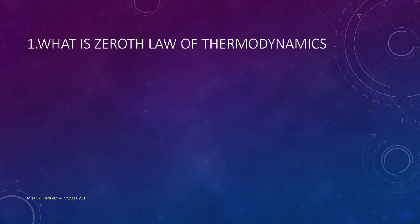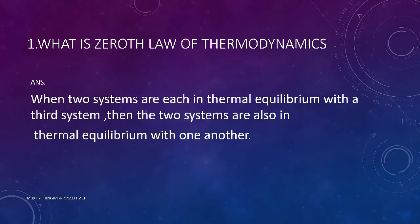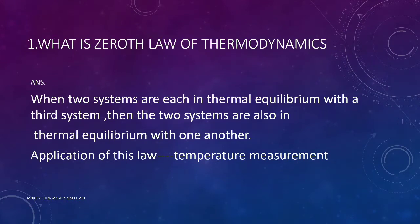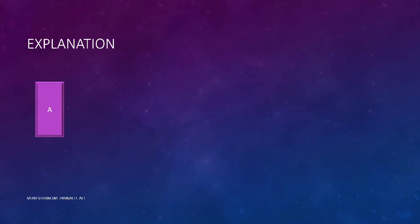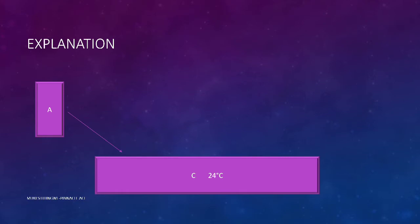What is the zeroth law of thermodynamics? When two systems are each in thermal equilibrium with a third system, they are also in thermal equilibrium with one another. An application is temperature measurement. Suppose system A is in equilibrium with system C — the property which defines this equilibrium is temperature.